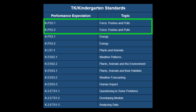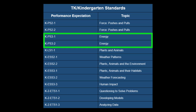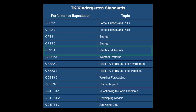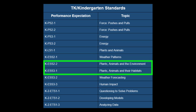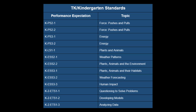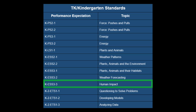K-PS2-1 and PS2-2 both deal with different aspects of force and motion. K-PS3-1 and PS3-2 both deal with energy. K-LS1-1 is all about plants and animals. K-ESS2-1 and ESS3-2 are about weather. K-ESS3-1 and ESS3-2 are about plants and animals' environments and habitats. And finally, K-ESS3-3 is about human impact on the environment.